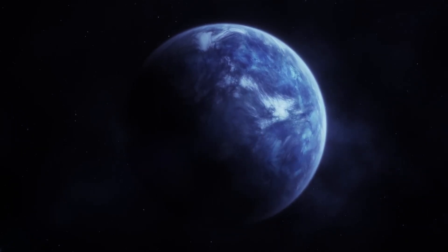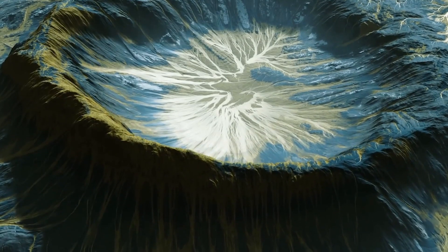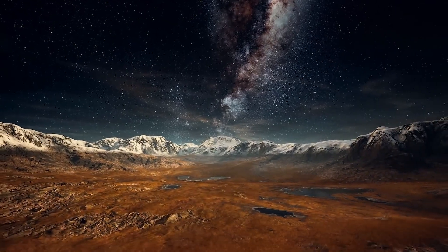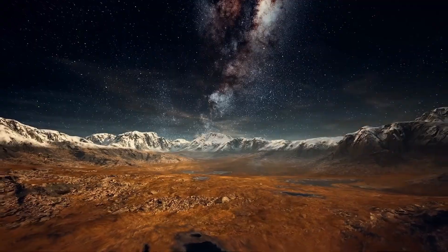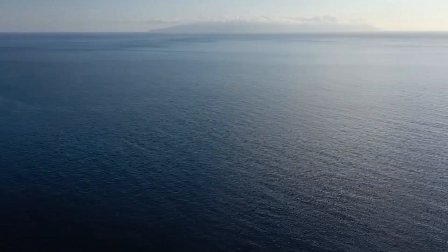Europa is slightly smaller than the moon of Earth. To everyone's amazement, it is believed to have a layered structure with a rocky mantle, an iron core, and a vast ocean of salty water beneath its icy surface. This ocean is believed to be 40 to 100 miles below the surface, which is several times deeper than the seas on Earth.